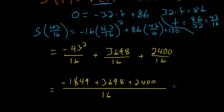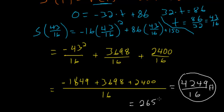This numerator simplifies to 4,249, and we have to divide by 16. Since this fraction doesn't simplify, this is the correct answer. This is the height in feet that the ball reaches when the velocity is 0. And as a decimal, this is equal to 265.5625.